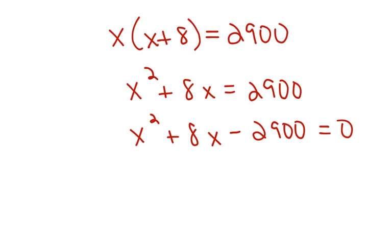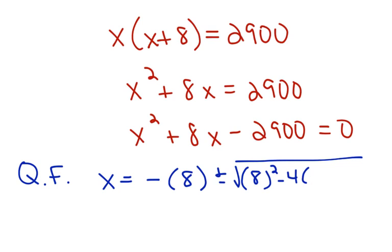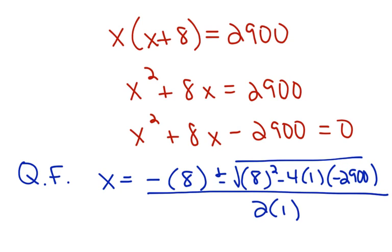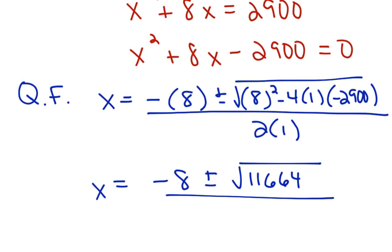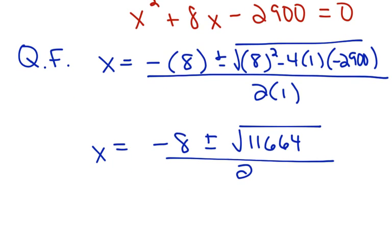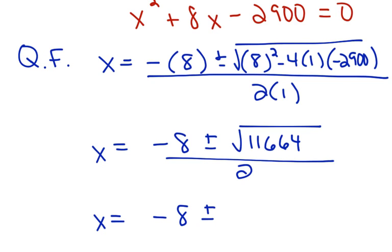So, at this point in time, I would probably just go to the quadratic formula to finish solving this. X is equal to the opposite of B plus or minus the square root of B squared minus 4AC all over 2A. Then, I would simplify, this is negative 8, plus or minus, simplify the part under the square root. You should get 11,664 all over 2. The square root of 11,664 is 108, so X is equal to negative 8 plus or minus 108 all over 2.